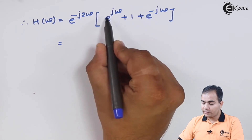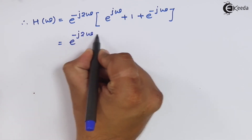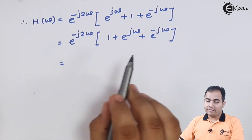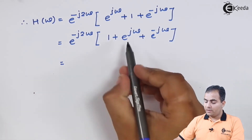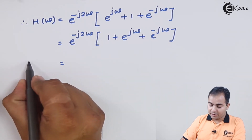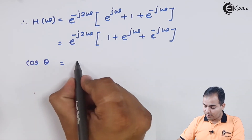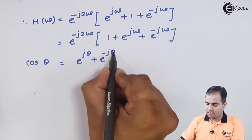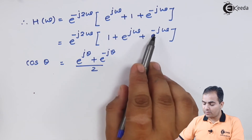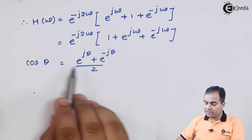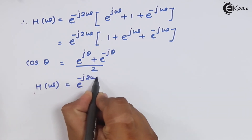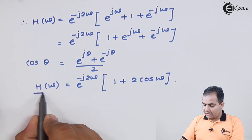Now I am going to write e to the power jω and e to the power minus jω together. I will multiply and divide the whole bracket by 2. We have e to the power jω plus e to the power minus jω, and there is a formula related to this: the exponential form of cosine, which is cos θ = (e^(jθ) + e^(−jθ)) / 2. Since we do not have a 2 in the denominator, we multiply and divide by 2, so the expression inside the bracket becomes 2cos(ω). This gives the equation for H(ω).